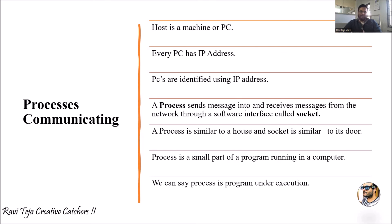To summarize: a process helps in the execution of a program — sending, transmitting, or receiving messages through a network. Everything is done through a gateway called a socket. A process is similar to a house, and the socket is similar to a door. A process is a small part of a program or set of instructions running on a host — a program under execution can be considered a process. On the whole, everything is considered as processes communicating.